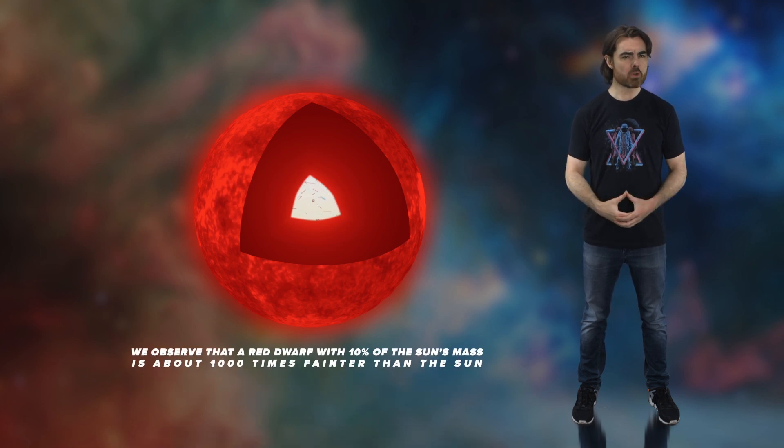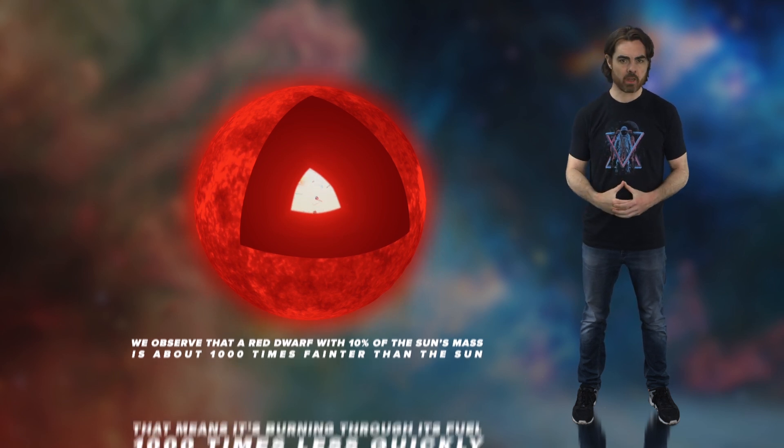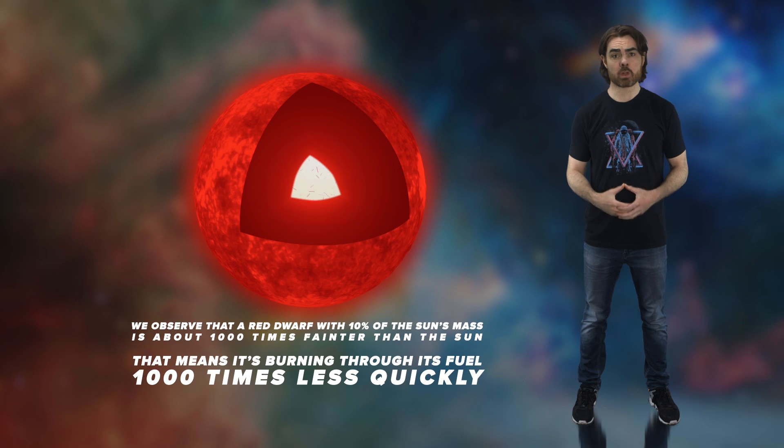This is all Astro 101, so let's get a little crunchy and figure out the lifespan of red dwarf stars, also known as M dwarfs. We observe that a red dwarf with 10% of the sun's mass is about 1,000 times fainter than the sun. That means it's burning through its fuel 1,000 times less quickly. But it also has less fuel to burn, right? Actually, wrong.